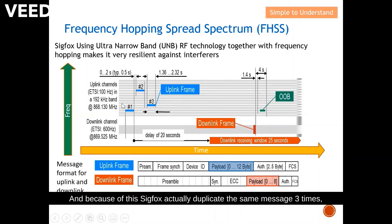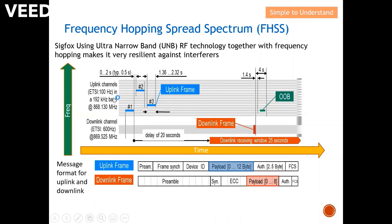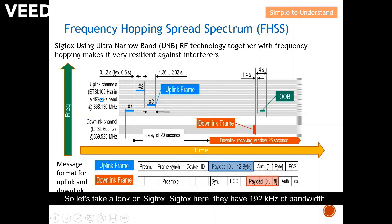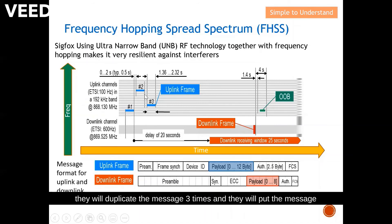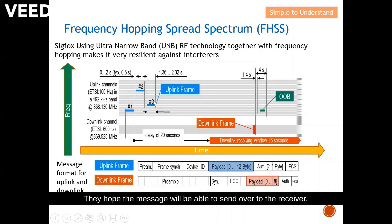Because of this, Sigfox actually duplicates the same message three times to ensure a higher possibility of successfully sending the message to the receiver. Sigfox has 192 kilohertz of bandwidth, and every channel occupies 100 hertz, giving 1920 possible channels. When they send a message, they duplicate it three times and place it on three different channels at three different times. If there are not many users, the message will very likely reach the receiver successfully.